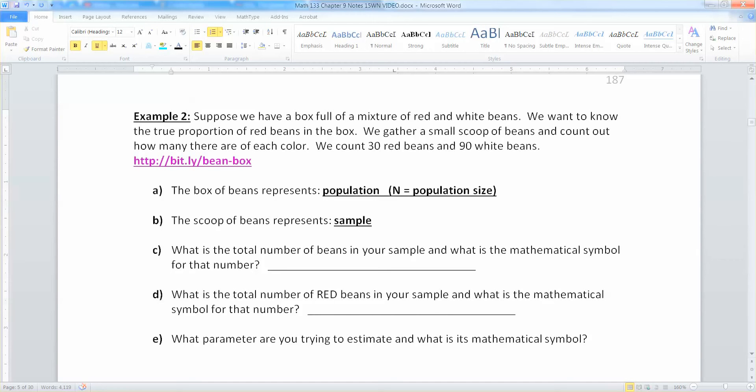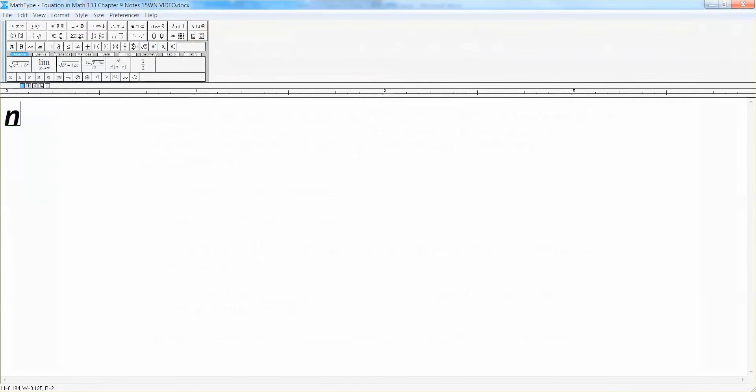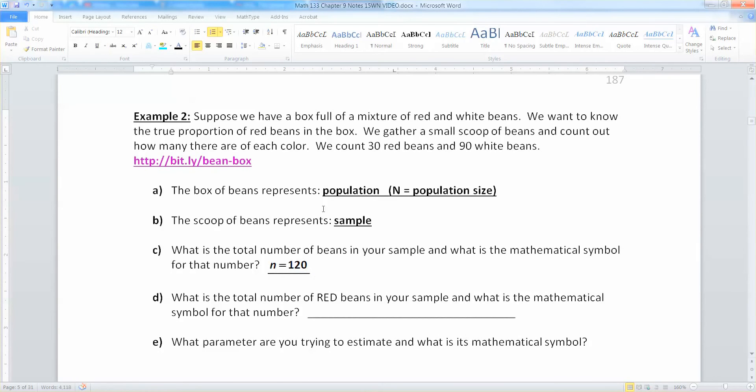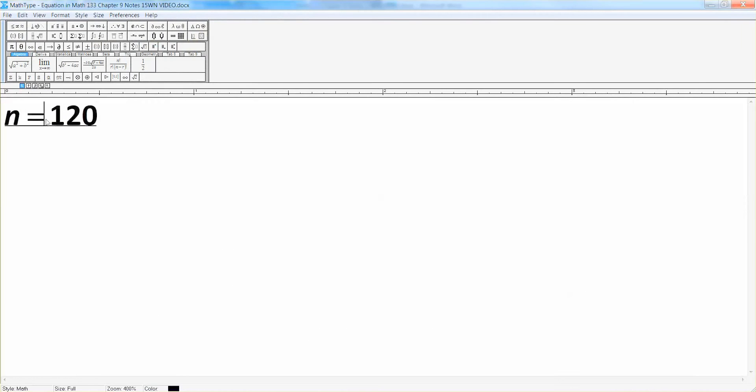Then the scoop of beans represents a sample. So what was our sample size, the total number of beans in our sample, and then what is its mathematical symbol? Well that was N which was 120. So we had 120 beans in our scoop, and I get that by taking 30 plus 90, which makes 120 total.